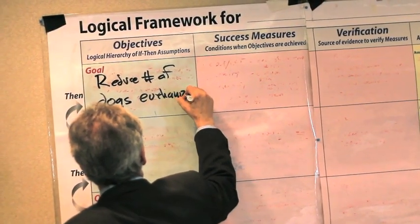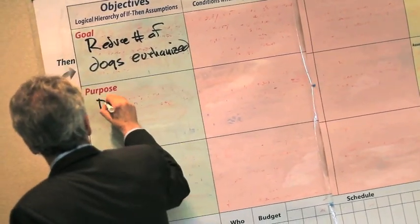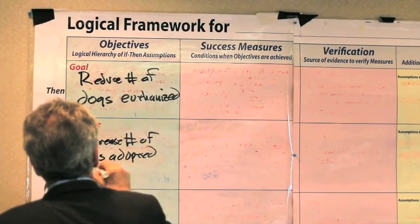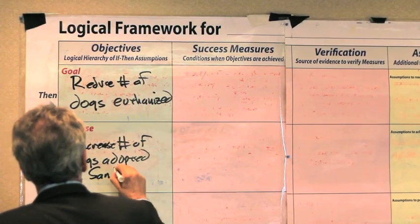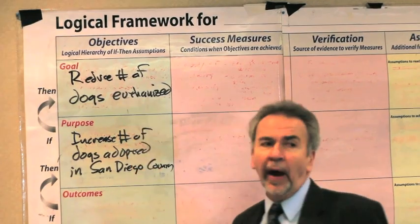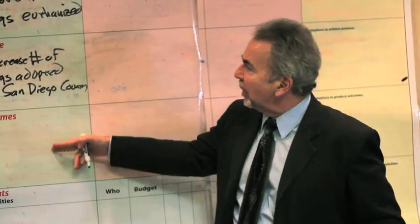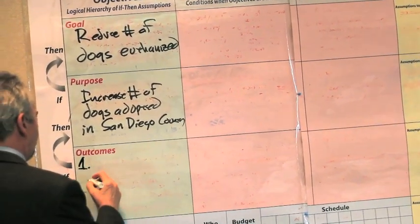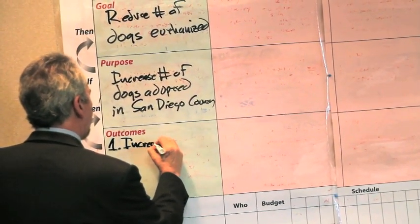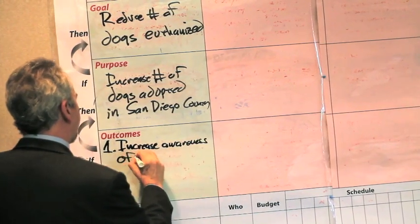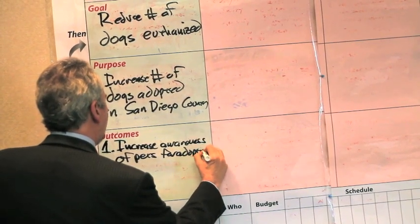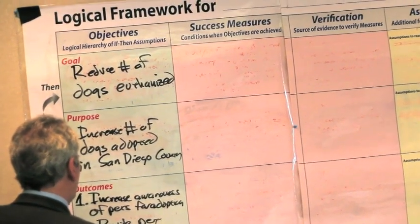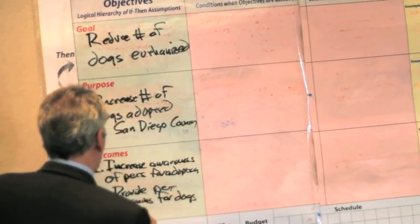So what do we have to do in order to reduce the number of dogs euthanized? Increase the number of dogs adopted. We begin to structure the hierarchy of objectives — what's one of the outcomes, one of the things that we can make happen that would lead to this benefit? Increase awareness of pets available for adoption. And the second outcome: provide pet training for dogs that are difficult to place.